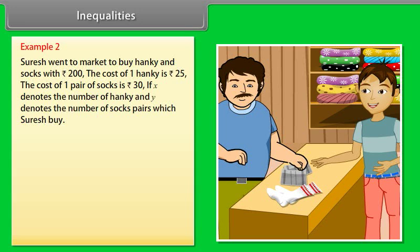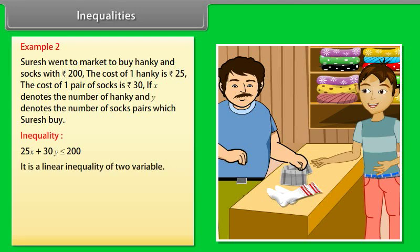Example 2: Suresh went to market to buy hanky and socks with rupees 200. The cost of one hanky is rupees 25 and the cost of one pair of socks is rupees 30. If x denotes the number of socks pairs which Suresh buys, then we can represent the statement in inequality form as: 25x + 30y ≤ 200. It is a linear inequality of two variables.